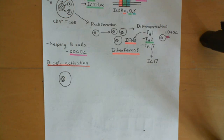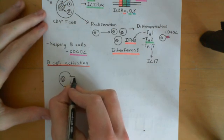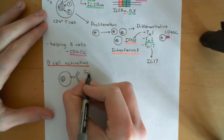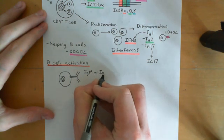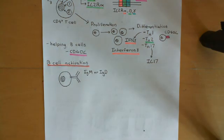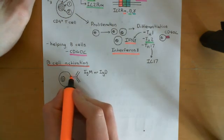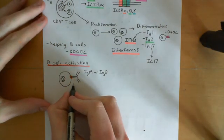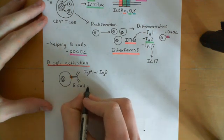B-cells put on their surface a certain type of antibody molecule that they produce, which is an IgM or IgD molecule that has had a special modification — a transmembrane portion added to it. These are not just normal IgM or IgD molecules; they've had an extra bit added at the bottom which passes through the membrane and anchors this special antibody molecule on the surface of the B-cell.